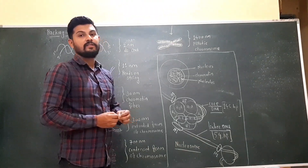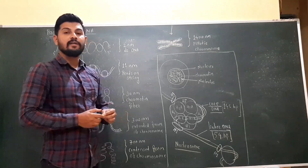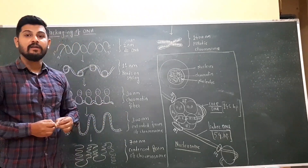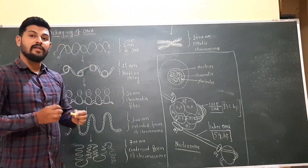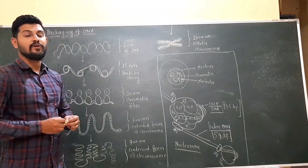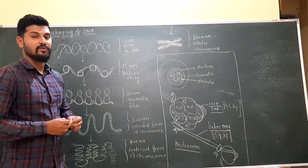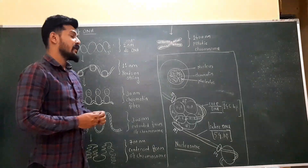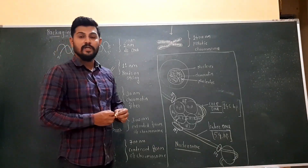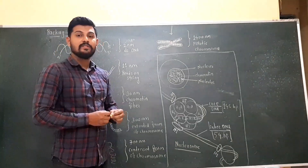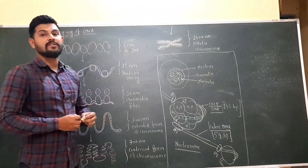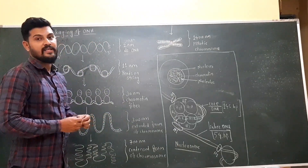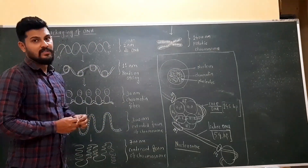The DNA is negatively charged because DNA has the phosphate in them. Due to the presence of phosphate, the DNA has the negative charge. So this negatively charged DNA is wrapped around the basic proteins called as the histone proteins.